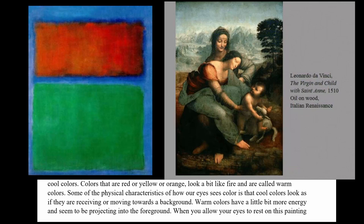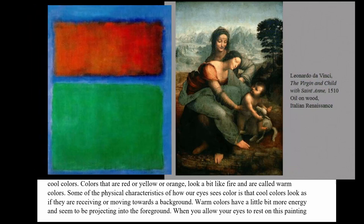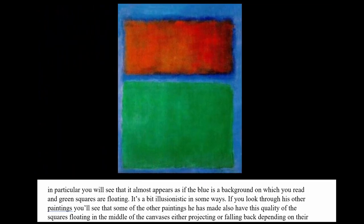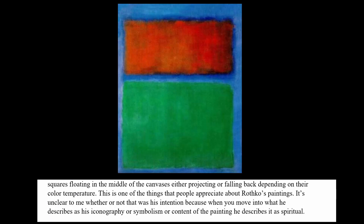If you let your eye rest on this painting, you'll see that the squares on the background are floating. The blue in the background reads as the background. The muted green square sits between the red plane and the blue plane. He makes these squares float almost as if they're an illusion of reality — almost like a kind of landscape, even though they're abstract paintings.